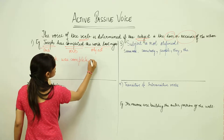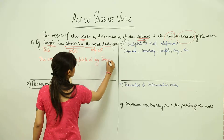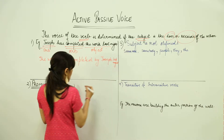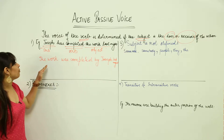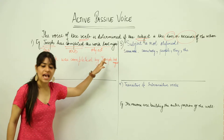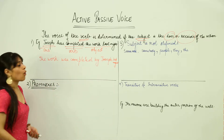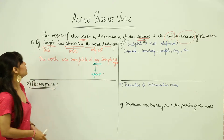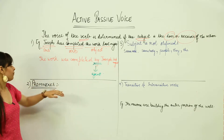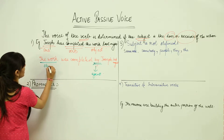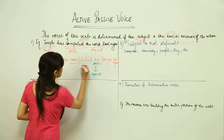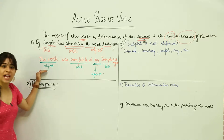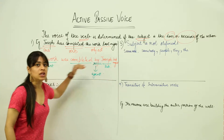Now let's see this in the passive voice: The work was completed by Joseph last night. You can see clearly that the object has been replaced with the subject, and the subject has taken the place of the object. In passive voice, we use a specific word — 'by' — as the agent, to show the connection between the subject, object, and the verb. The interchange of positions has led to a change of voice, making the object more prominent than the subject. So this becomes a passive voice.